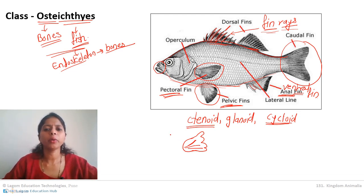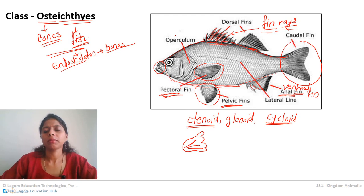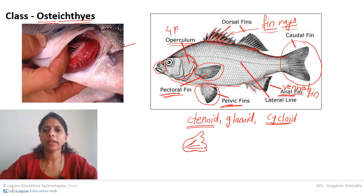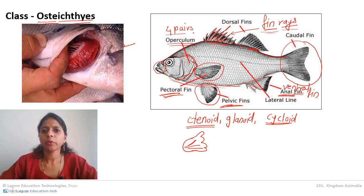The next characteristic is respiration, which is branchial respiration — respiration with the help of gills. The gill slits are present inside a flap called the operculum, which covers the gills. There are always four pairs of gills — four on each side.